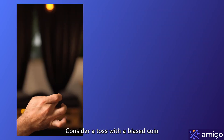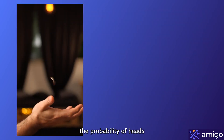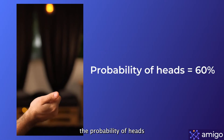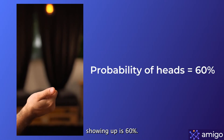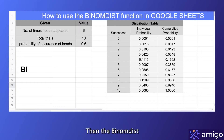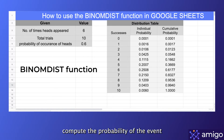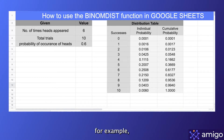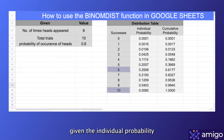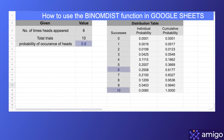Consider a toss with a biased coin where the probability of heads showing up is 60%. The BINOMDIST function in Google Sheets would help compute the probability of the event — for example, the probability of heads showing up 6 times out of 10, given the individual probability of a single coin toss is 0.6.